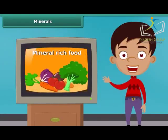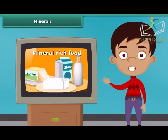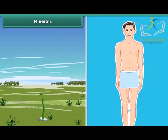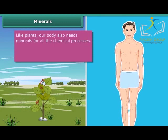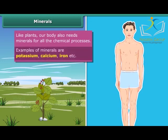You might have seen many advertisements of mineral-rich food items. Now let's know why they are so important. Plants need minerals for growth. A body also requires minerals in small quantities for all the chemical processes. Potassium, calcium, iron, etc. are some common examples of these minerals. Let us know more about the sources and the role of these minerals using the next table.